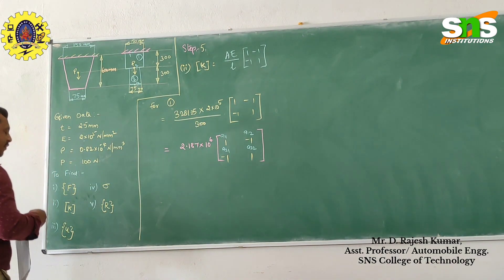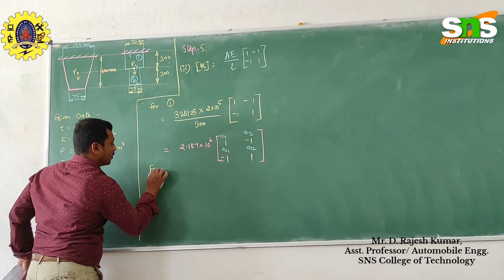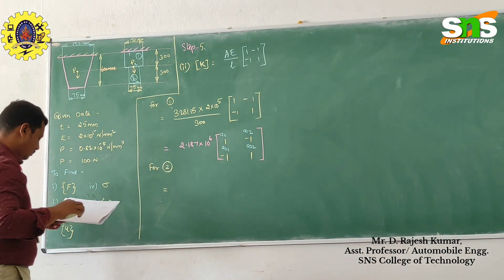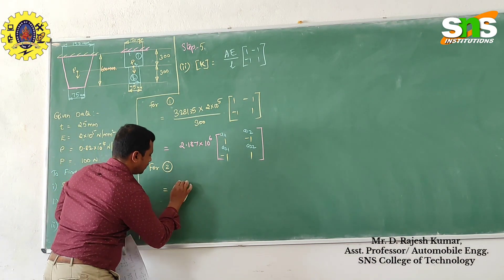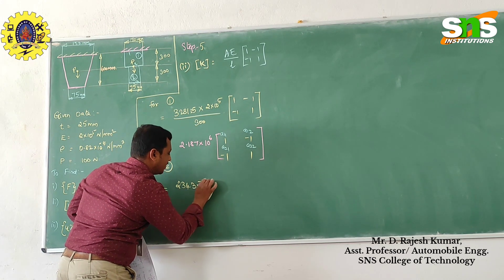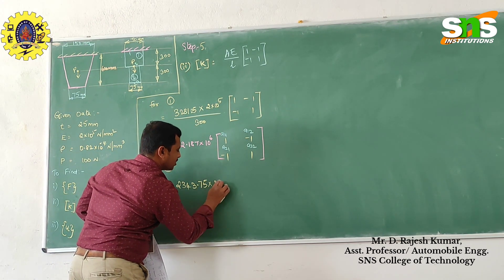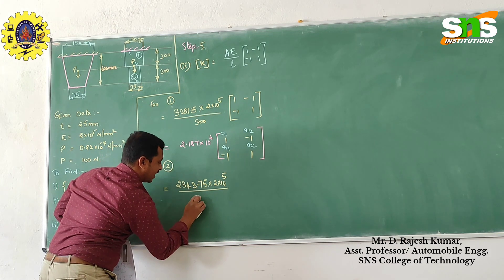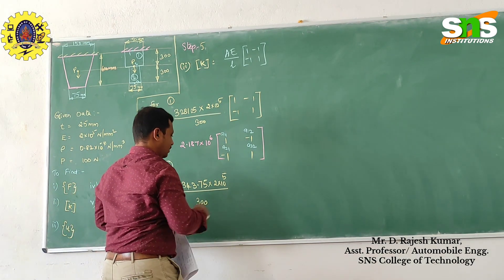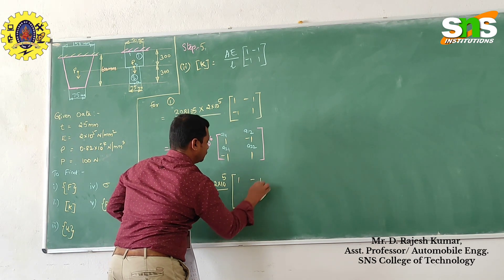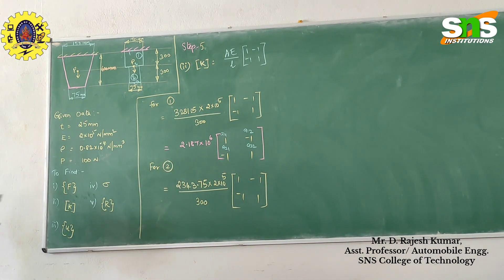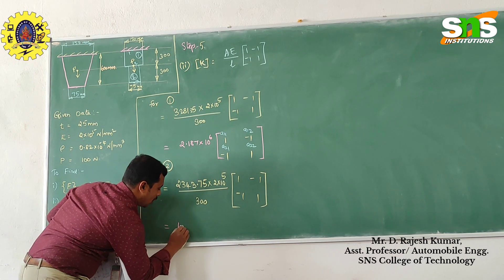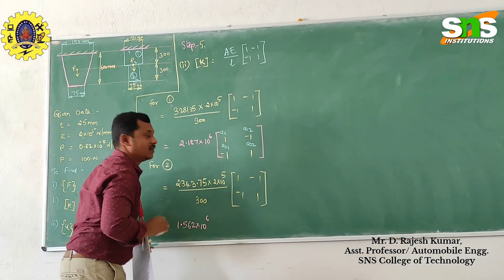Similarly, find it for element number 2. What is the average area of element number 2? The area comes out to 0.1, giving 0.175 into 0.6. With 2 into 10 power 5 and the length of element 2 being 300, the result is 1.56.